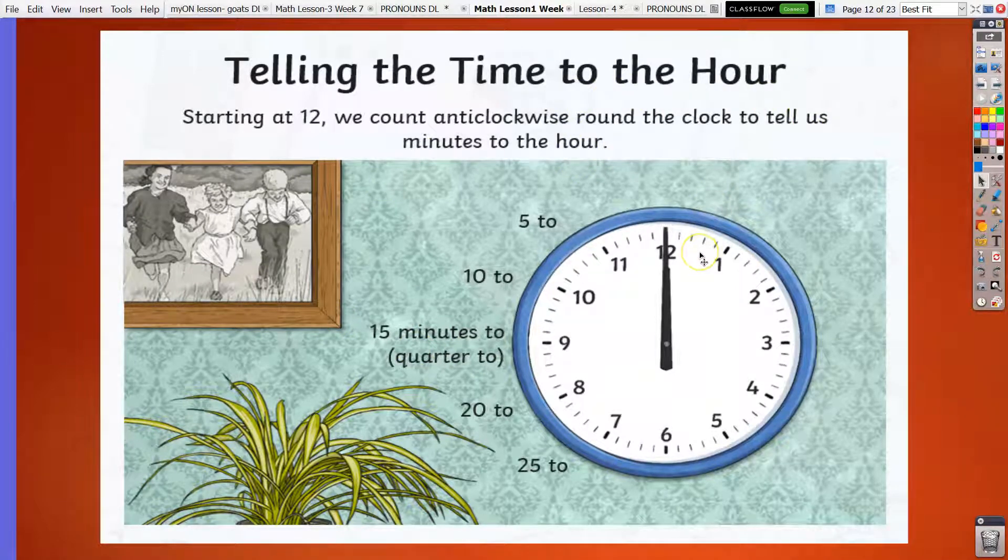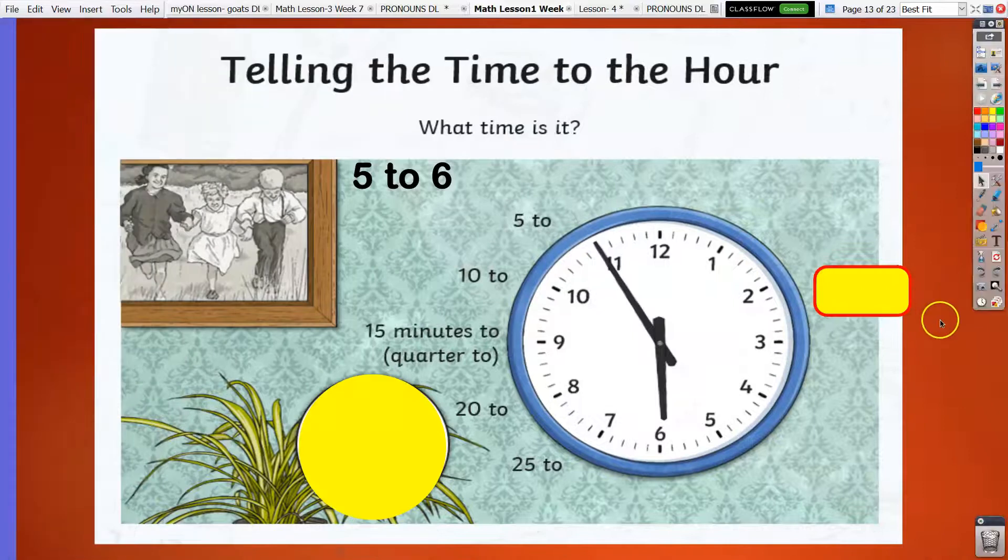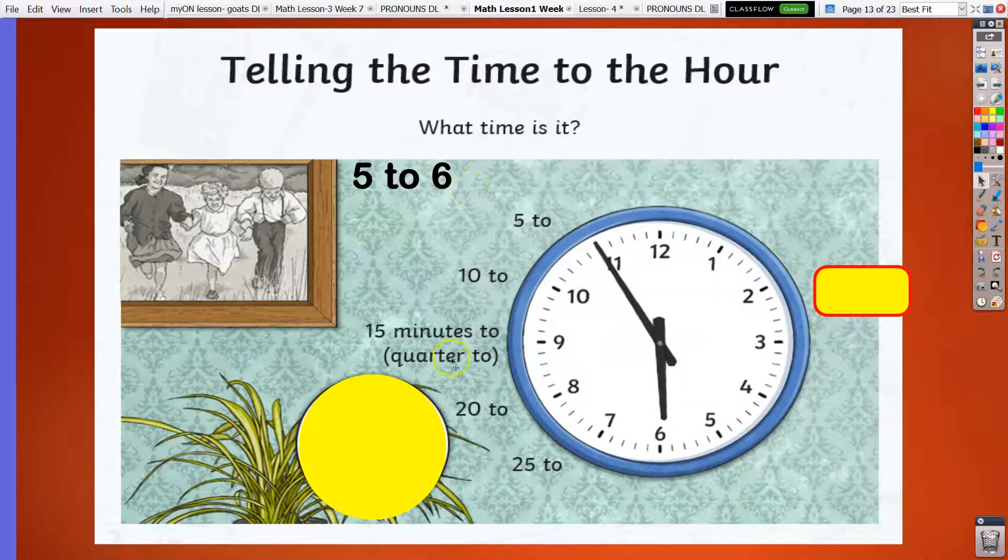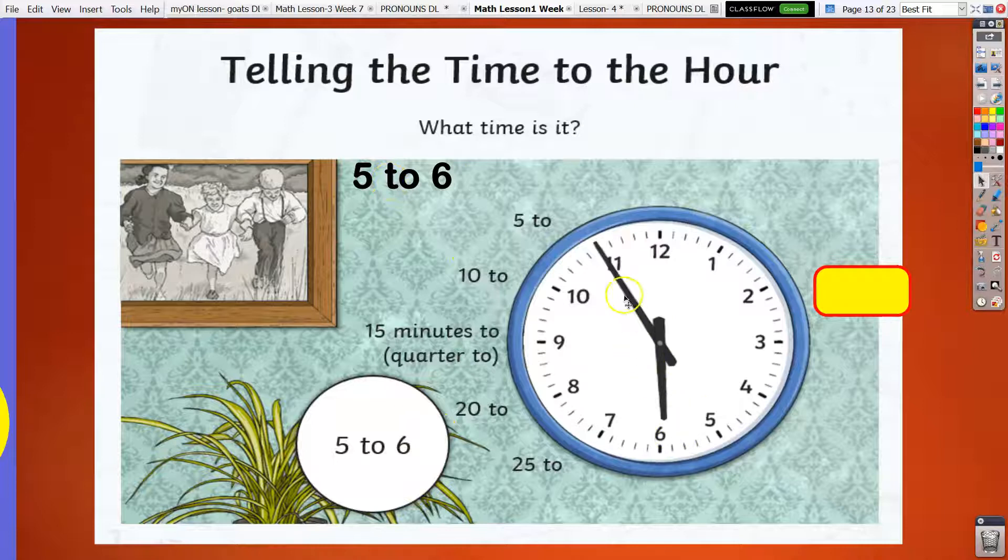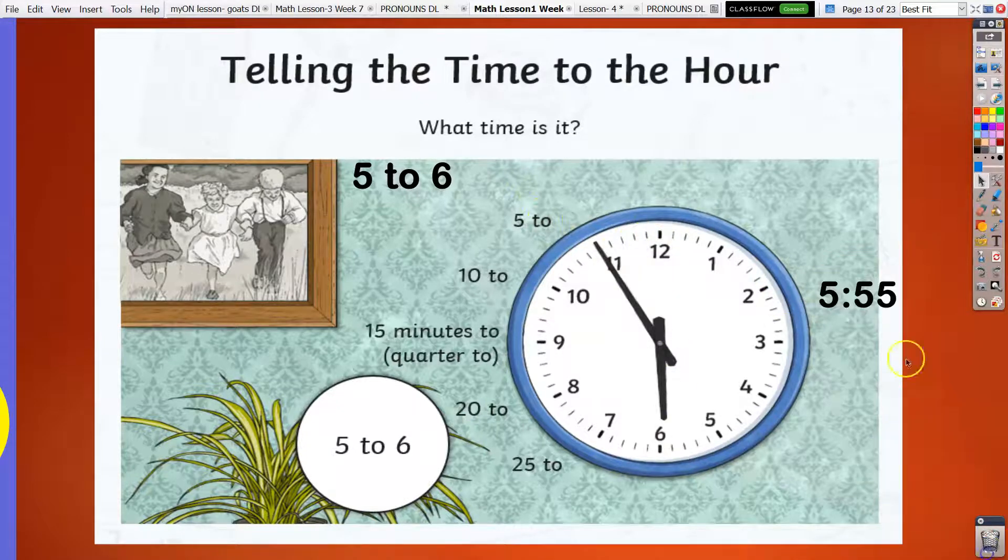Take a look at this example. So, it's 5 to 6, 5 to 6. So, it's already 2, 5 minutes to 6 o'clock. 5 to 6, or 5 minutes to 6, or 5:55.